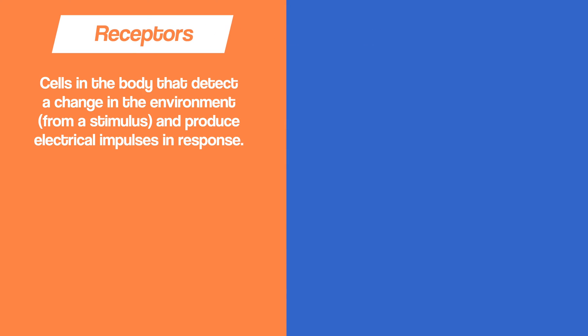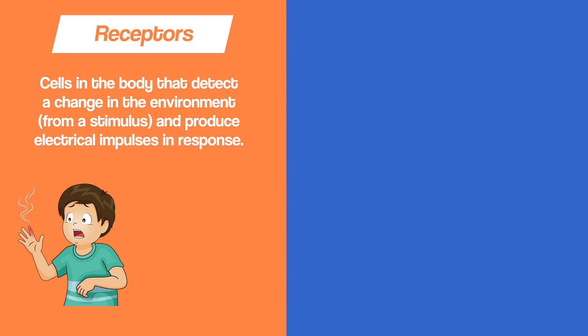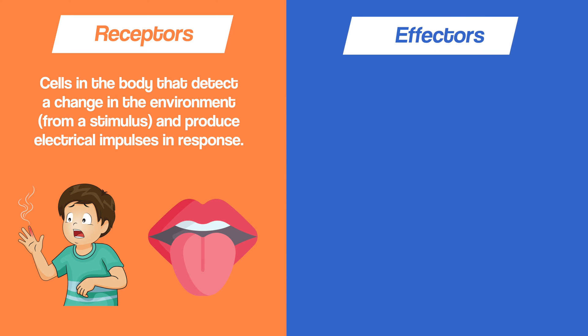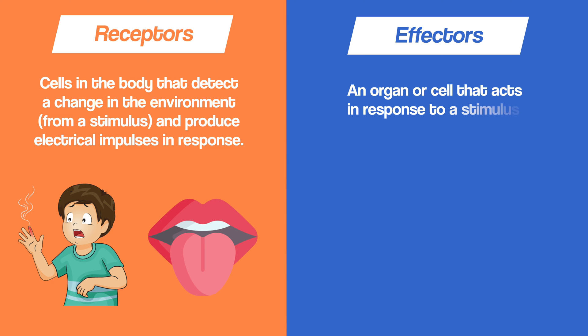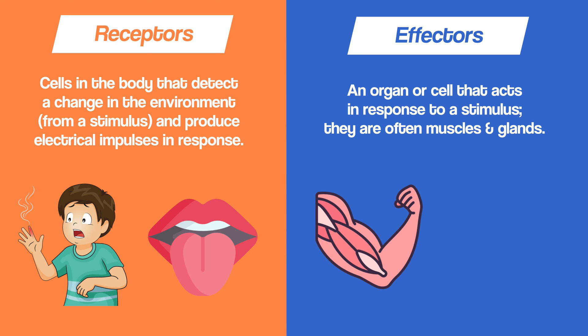Now let's look at the different types of neurons, and to do that we need to talk about receptors and effectors. Receptors are cells in the body that detect a change in the environment from a stimulus and produce electrical impulses in response — for example, skin receptors detecting temperature or tongue receptors detecting chemicals in food. Effectors are organs or cells that act in response to a stimulus; they are often muscles and glands.